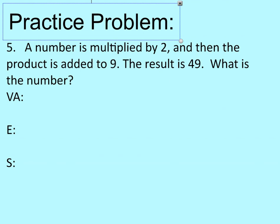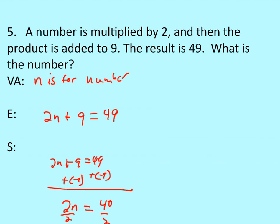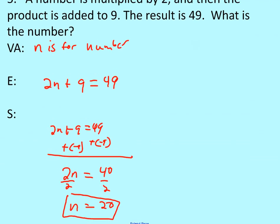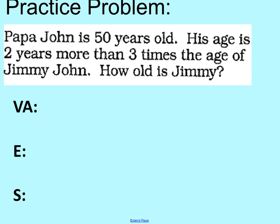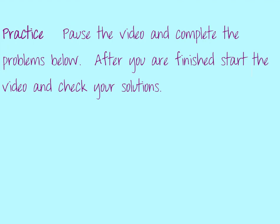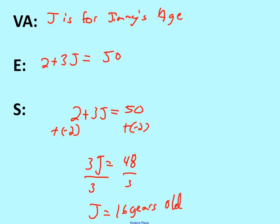For problem number five, copy it down, set it up on your paper, pause the video, and work it out. Now that you've unpaused, go ahead and check your work — the answer should be n equals 20. For problem number six, copy it down, pause the video, solve it, and then unpause to check your work. The answer: Jimmy is 16 years old. Thank you for doing your homework tonight. I'll see you in class tomorrow — we're going to do more with equations. Bring your questions, please.